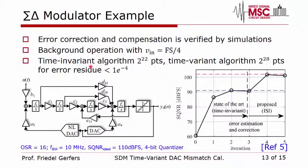Here are the final simulation results. In the first three iterations using only time-invariant static error estimation, after error injection we see just 60 dB SQNR performance. After the first iteration there is approximately a 30 dB increase, and after three further improvement iterations we settle at approximately 90 dB SNDR, now limited by time-variant errors. After also calibrating the time-variant errors, we reach 103 dB SNDR — only 7 dB below the ideal 110 dB — because we use the same Sigma-Delta modulator to measure the errors, introducing a residual error floor.